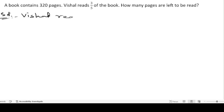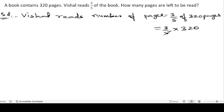Vishal reads number of pages equals 3/5 of 320 pages. So 3/5 of means multiply by 320. Let us cancel: 5 ones are 5, 5 fours are 20, 6 twos are 12, so we get 64. So 3 times 64: 3 fours are 12, 3 sixes are 18 plus 1 is 19. So 192 pages.